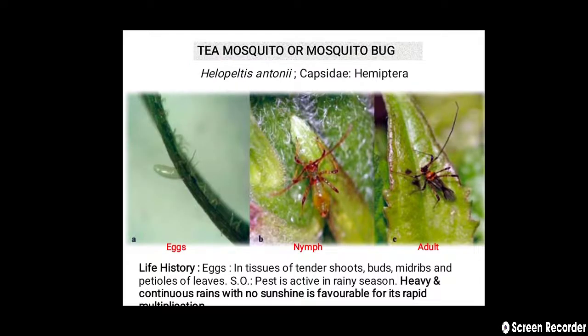The first pest is the tea mosquito or mosquito bug. The scientific name of this pest is Helopeltis antonii, and it belongs to family Capsidae and order Hemiptera. As we know, when a pest belongs to order Hemiptera, the damaging stage of the pest is always nymph and adult.